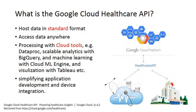First, we need to know what is the Google Cloud Healthcare API. The API has some major functions. The first one is to host data in standard format — the FHIR format. We can upload our healthcare data into the cloud, and with that we can access the data anywhere.